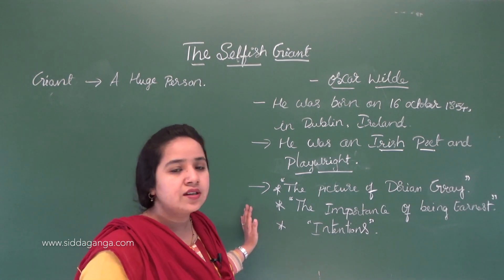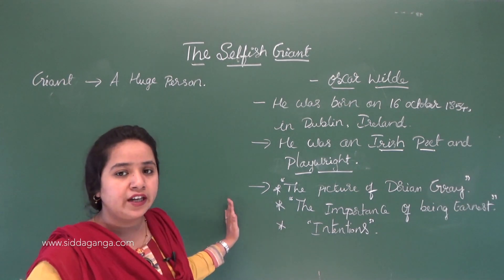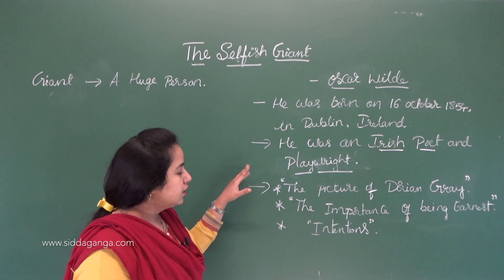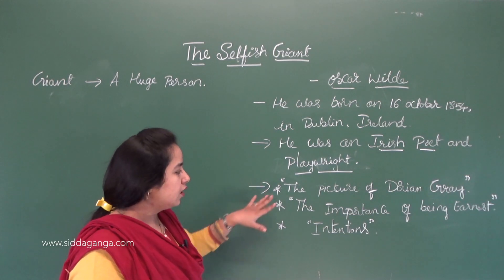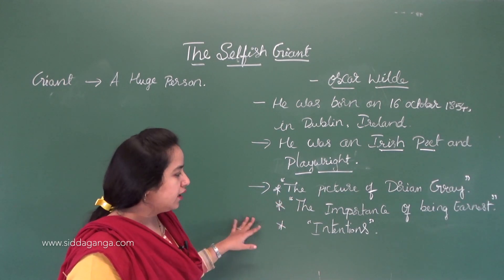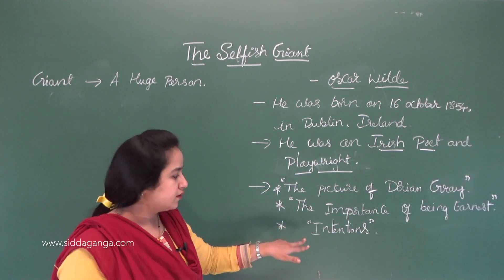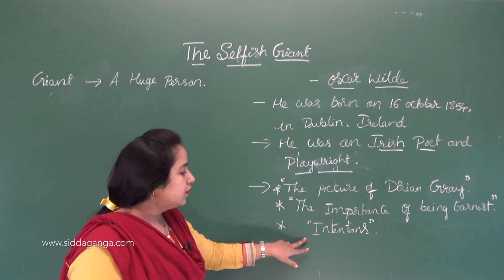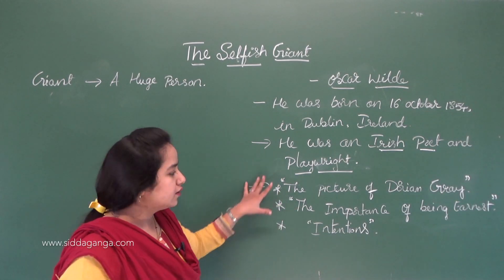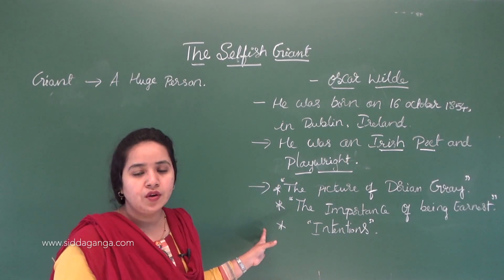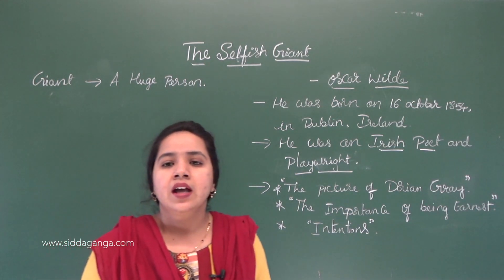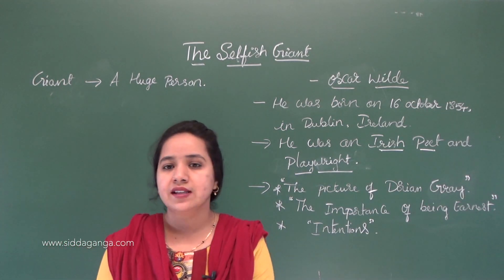He was an Irish poet and a playwright. He has written some great works. The great works are The Picture of Dorian Gray, The Importance of Being Earnest, and The Intentions. These are the notable works of Oscar Wilde.